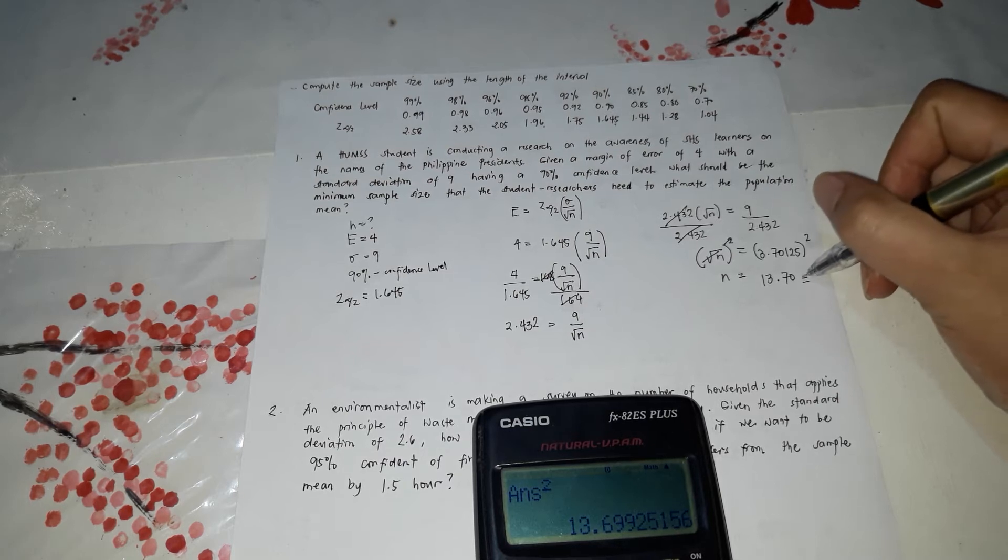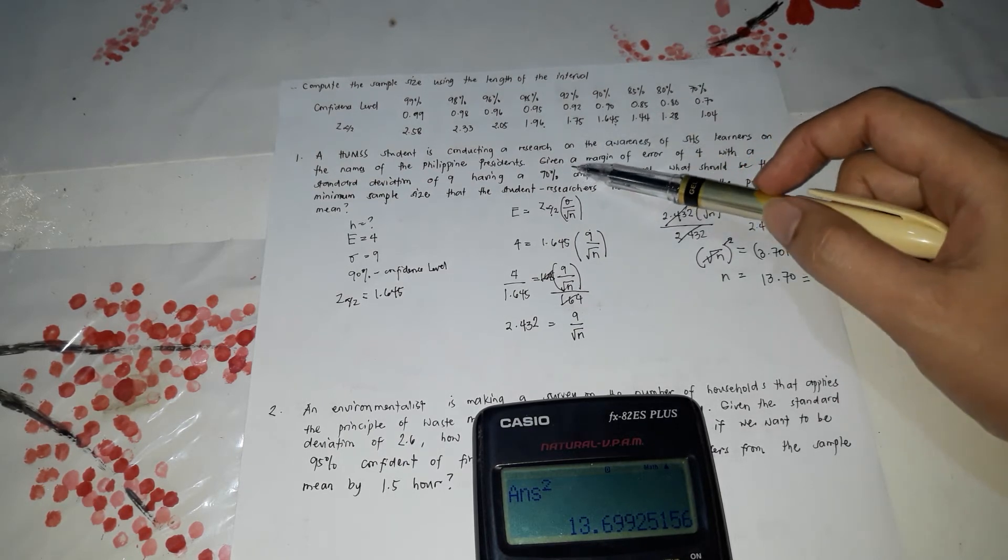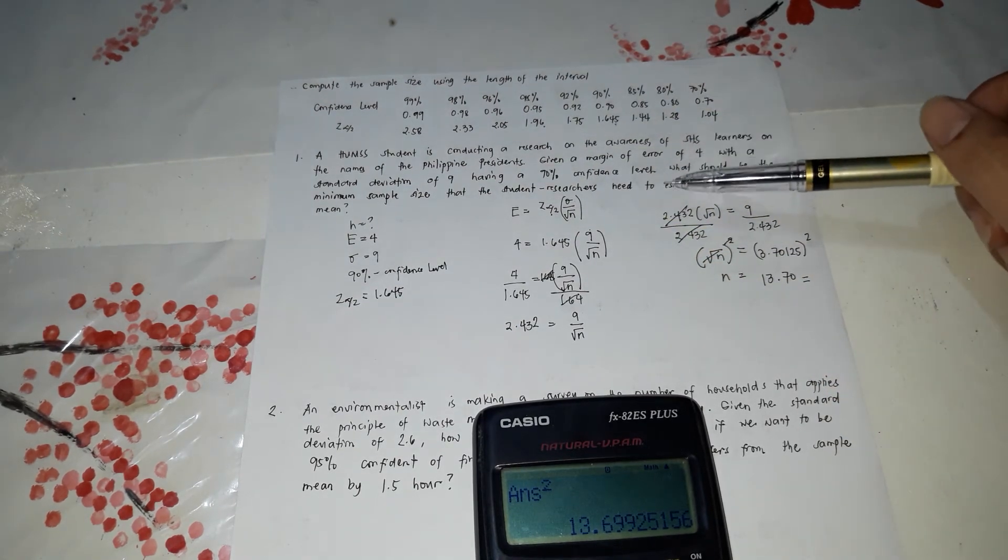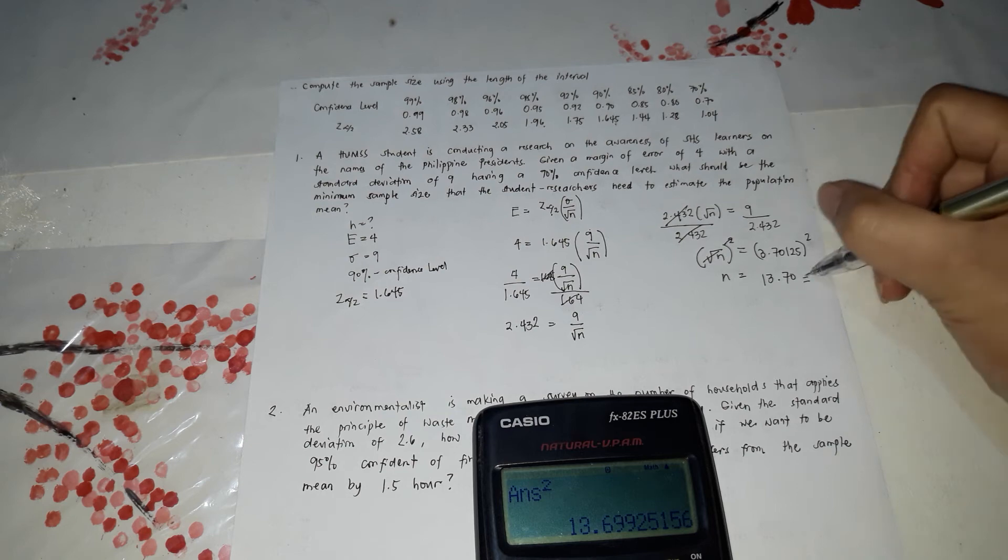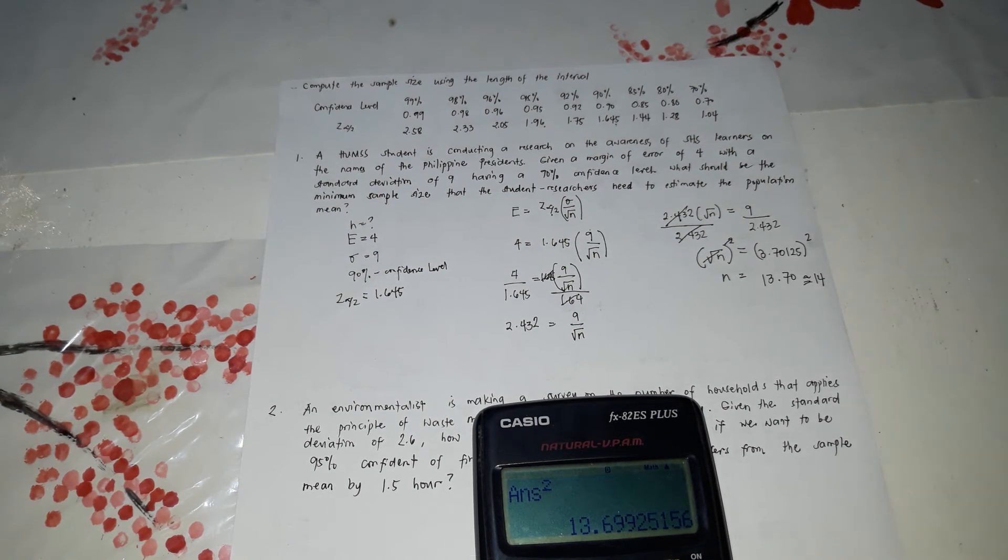So for him to be able to have the margin of error of 4 and a confidence level of 90% and the standard deviation of 9, the minimum sample size that he needs, or the number of students, is 13.70 or approximately 14. So he needs 14 learners.